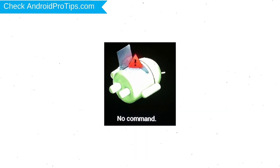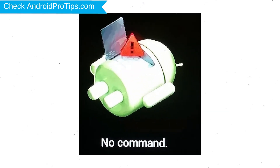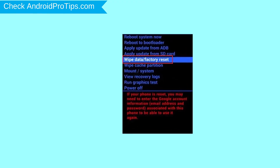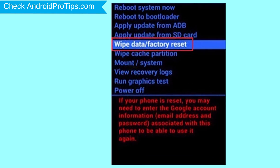Afterward, you will see the Android screen. Then, while holding down the power button, press and release the volume up button. Choose the option to wipe data and factory reset, using volume buttons to select and the power button to accept.